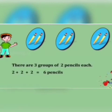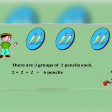As we can see in this picture, we have 3 groups of 2 pencils each. So if we want to calculate how many pencils we have in total, we will add them in groups. 2 plus 2 plus 2 is equal to 6 pencils. So we have 6 pencils with us.